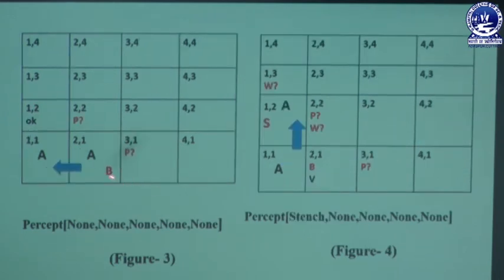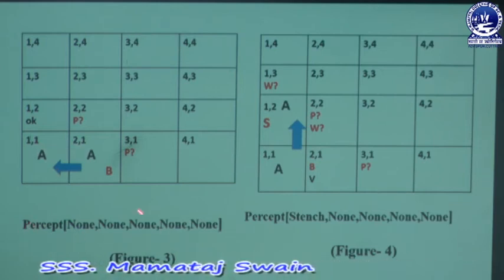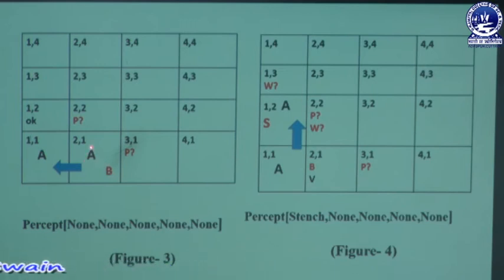In figure three, the agent returns from 2,1 to 1,1 because at 2,1 it perceived breeze, indicating a pit in its adjacent location. The agent has no safe option to move to 3,1 or 2,2, since it is not sure which location contains the pit. Back at 1,1, the perception is nothing.